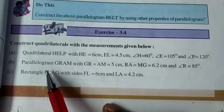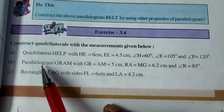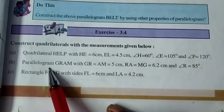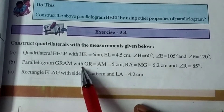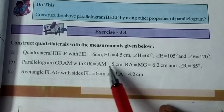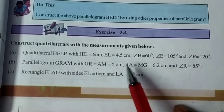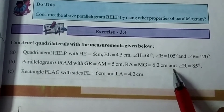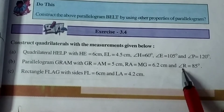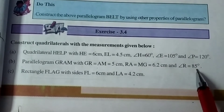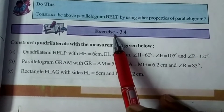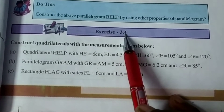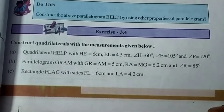From this video, I would like to explain the construction of a parallelogram GRAM with GR equals AM equals 5 cm, and RA equals MG equals 6.2 cm, and one of the angles, angle R, equals 85 degrees. This is from Exercise 3.4 of 8th class from AP and Telangana State Boards.